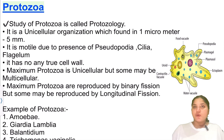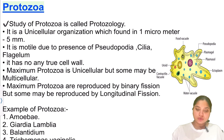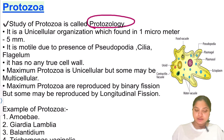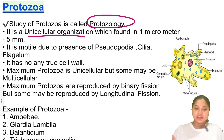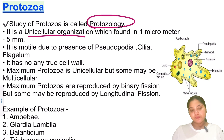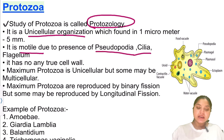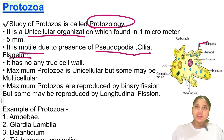Now let us see what protozoa is. The study of protozoa is called protozoology. Protozoa are unicellular organisms found in a size range of one micrometer to five millimeters. They are motile due to the presence of pseudopodia, cilia, and flagella. Flagella are tail-like structures, while cilia are short, fine hair-like structures that help in locomotion.